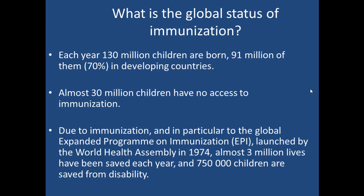So what is the global status of immunization? Each year, 130 million children are born in the world, with about 91 million — almost 70% — in developing countries. Almost 30 million children have no access to immunization, meaning about a third of all children never get vaccinated. It's a massive problem throughout the developing world. However, due to immunization, and particularly the Global Program on Immunization — or EPI — which was launched in 1974, 3 million lives are saved each year and 750,000 children are saved from disability.